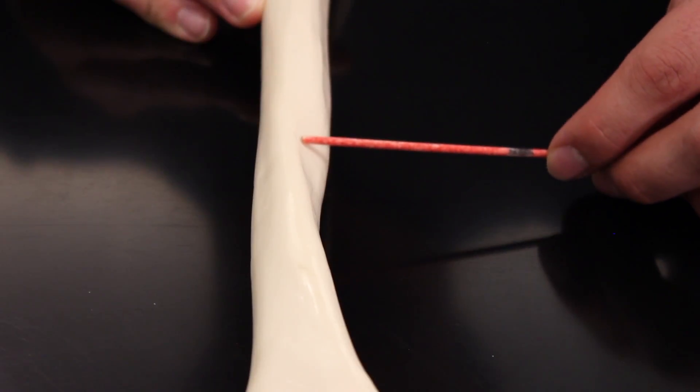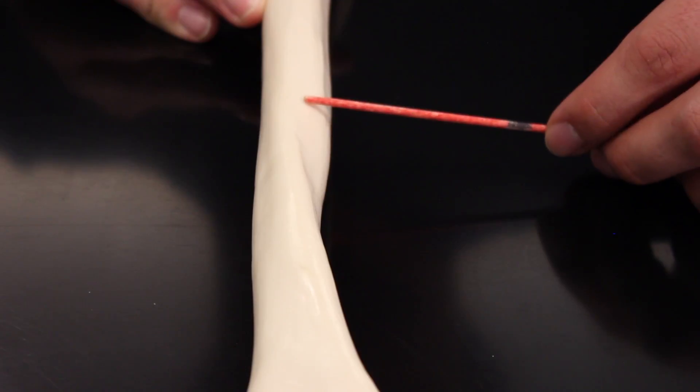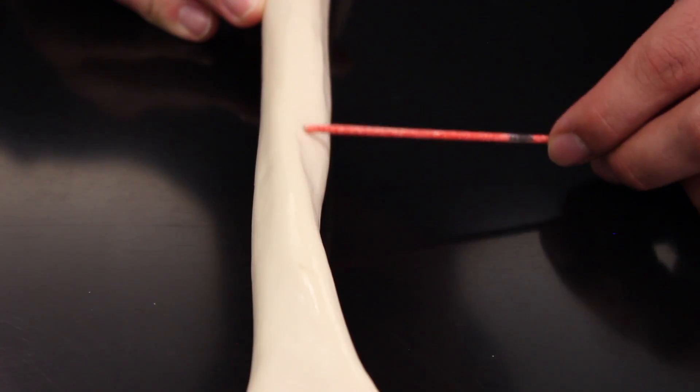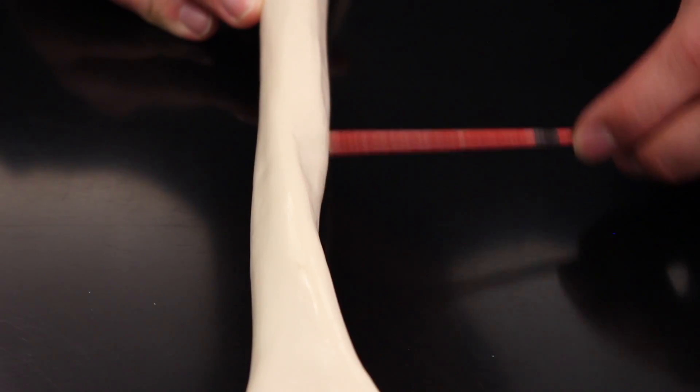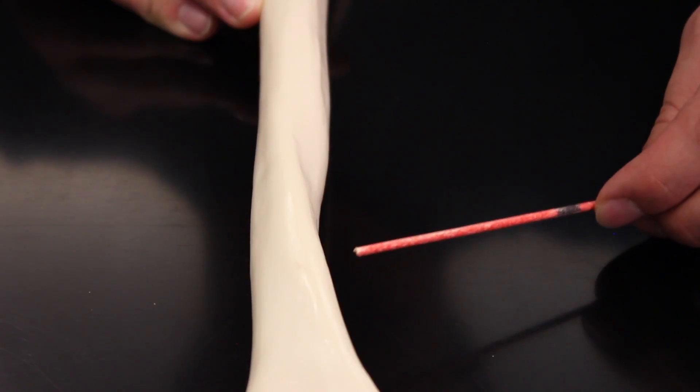If I'm moving down the diaphysis, you kind of see this big turn that this part of the bone makes right here. You see that turn? That right there specifically, as I'm coming down the diaphysis and boom, I hit that turn, that right there is the radial groove.